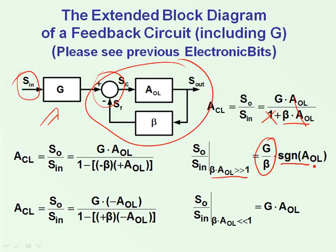We are left with the sign of the amplifier which takes into account whether it's an inverting or a non-inverting amplifier. When the beta A, the loop gain, is much smaller than one, then it can be neglected and we are left with G times A_OL, which is in this case. And this is actually beyond the normal operation region of the system.